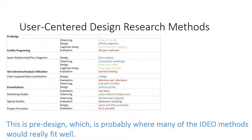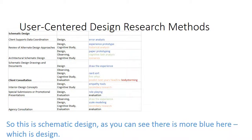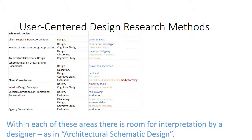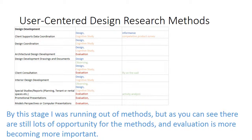This is pre-design, which is probably where many of the IDEO methods would really fit well. This is schematic design — as you can see there is more blue here, which is the design element. Within each of these areas there is room for interpretation by a designer, as architectural schematic design could involve various design methods. By this stage I was running out of methods, but as you can see there are still lots of opportunity for them, and evaluation is becoming more important.